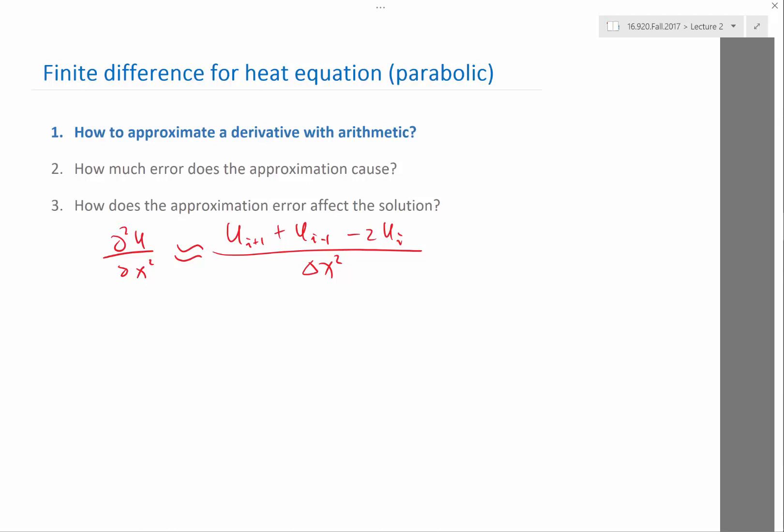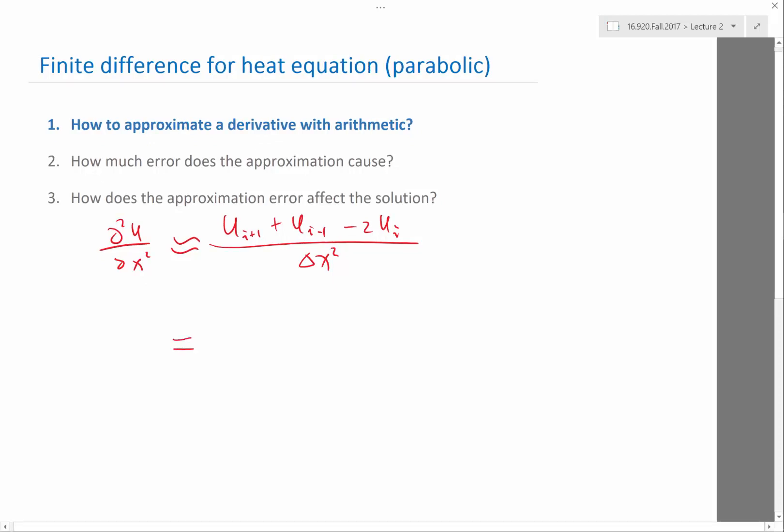Another way to derive it is using the idea of the difference of the difference. If you look at the same formula, it can be written as something divided by delta x. That something is u_i+1 minus u_i divided by delta x minus u_i minus u_i-1 divided by delta x.